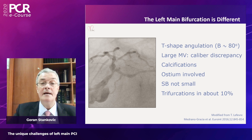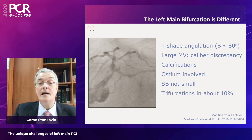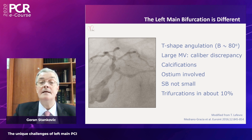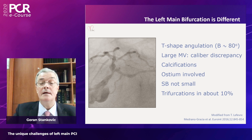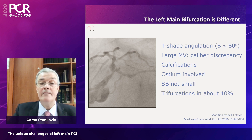Why is left main bifurcation different? Because the left main has specific anatomical characteristics, like a T-shape angulation with an angle of around 80 degrees on average. We also have discrepancy in caliber, because the left main proximal vessel is always large, and then there is a step-down in diameter when we go into the LAD or the circumflex. This caliber discrepancy creates technical challenges.